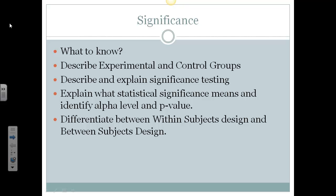So we're going to look at describing experimental and control groups in this part of the video. We're going to briefly talk about statistical significance and what that means, the alpha and p-value, a little bit more about that when we talk about stats, and we're going to differentiate between within-subjects design and between-subjects design. So remember to pause if you need to and write down questions that you can ask in class tomorrow.